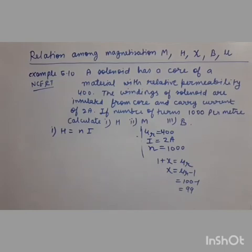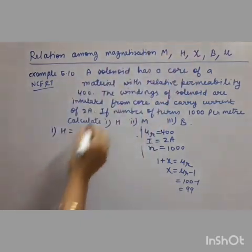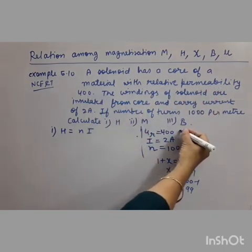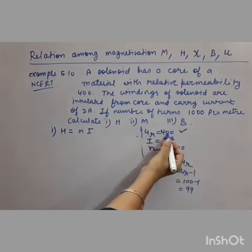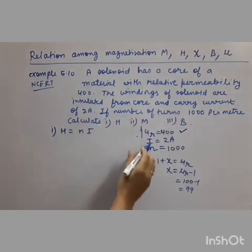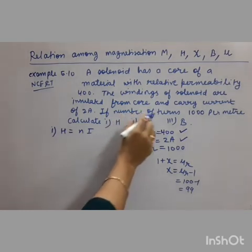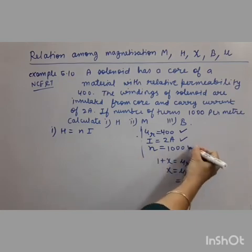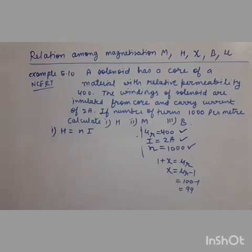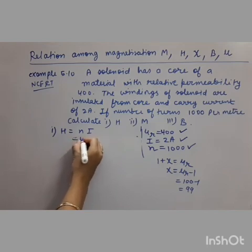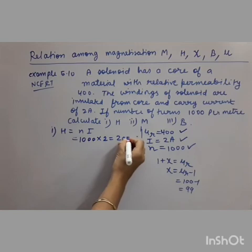Now we solve a numerical from the NCERT solved examples based on these relations. Question: a solenoid has a core of material with relative permeability μᵣ = 400. The windings carry a current of 2 ampere, and the number of turns is 1000 per meter. Using these three values we will solve for H, M, and B. First, H = Ni = 1000 × 2 = 2000 ampere per meter.